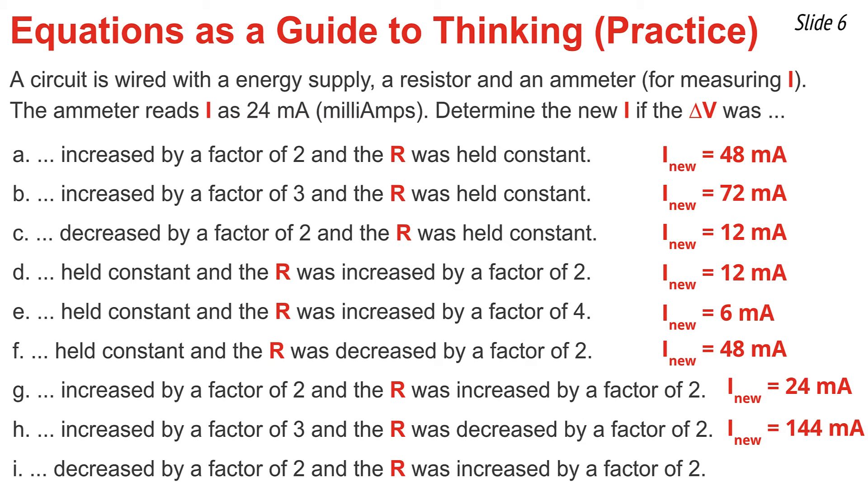In I, we notice that delta V is decreased by a factor of two and R was increased by a factor of two. Both of these changes are going to cause I to be decreased. So I have to take the 24 milliamps and halve it for the delta V change and halve it again for the R change. The result is 6 milliamps.